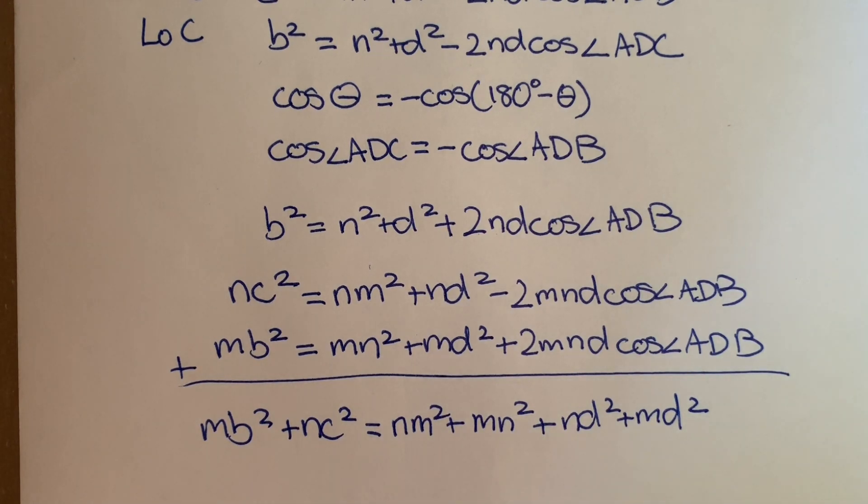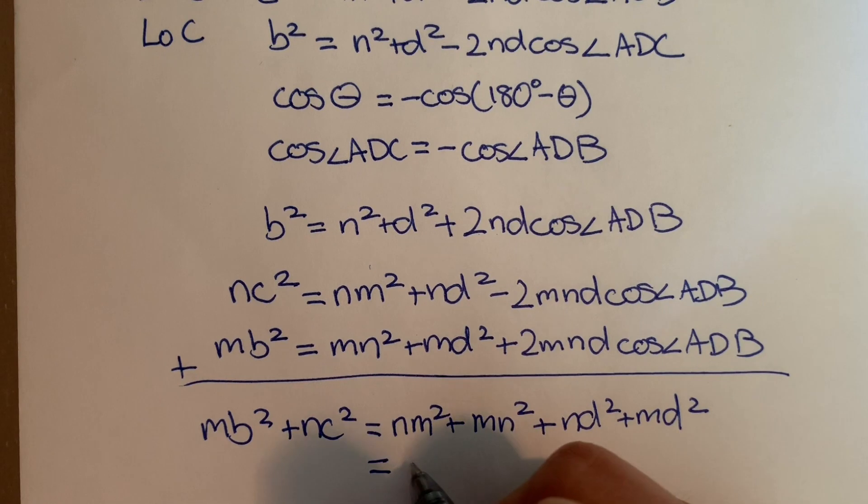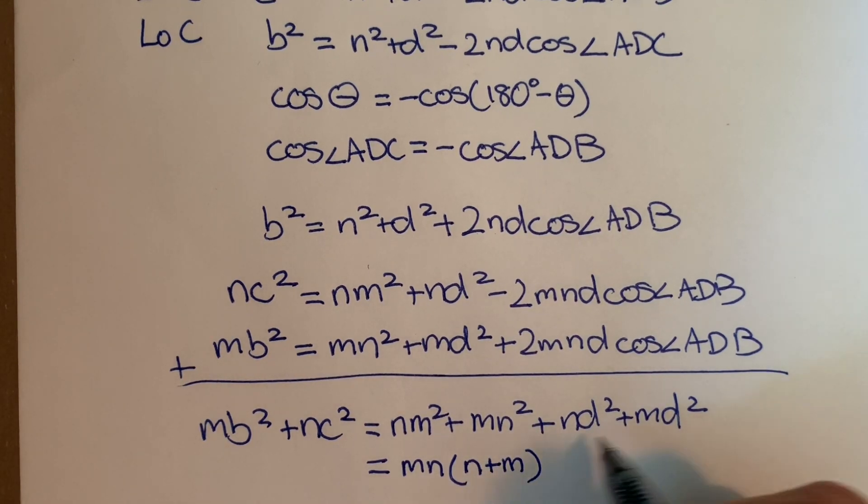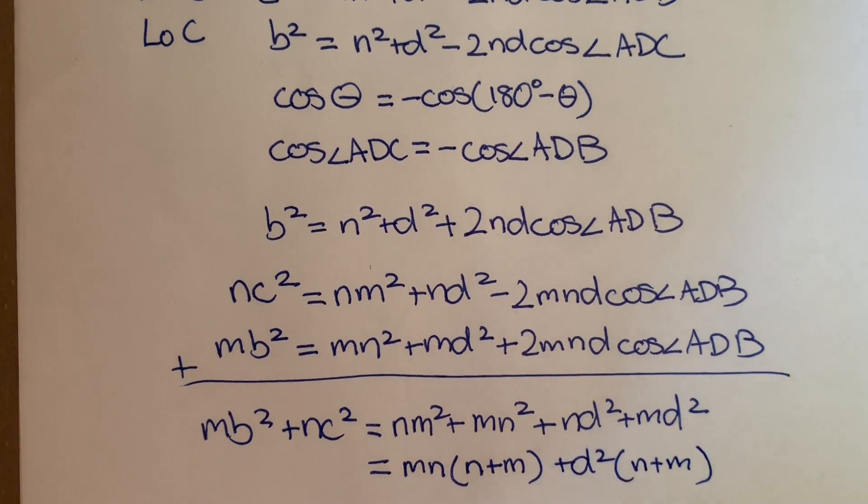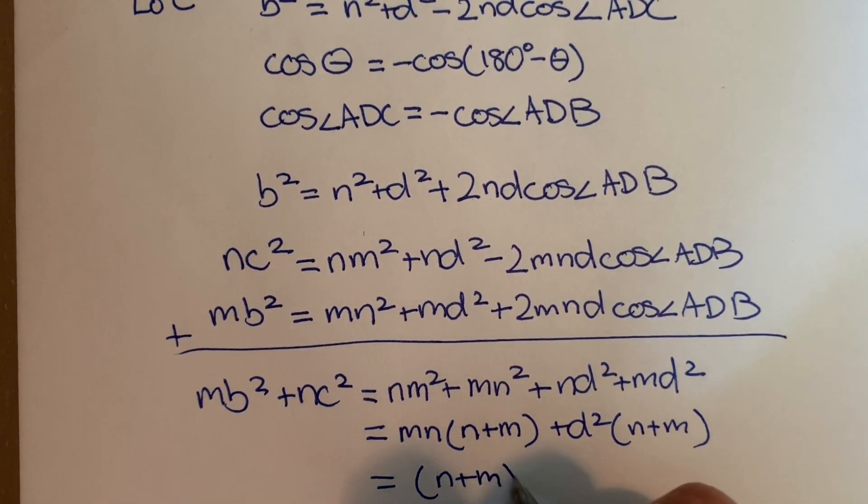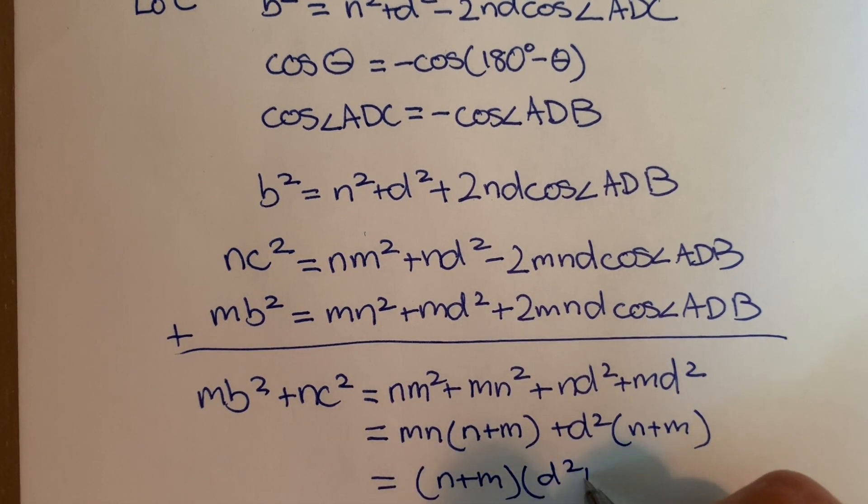Here's just a little bit of simplification. We can take the MN out of the first two terms, leaves us with N plus M. Then we can take out the D squared from these two terms, also left with N plus M. Finally, take out the N plus M, left with D squared plus MN.